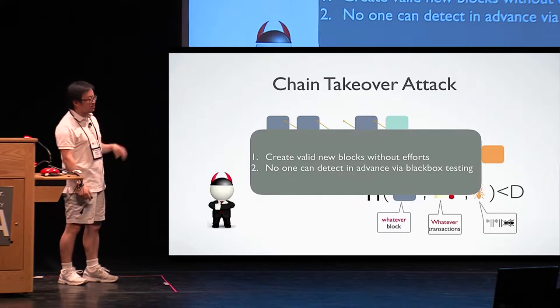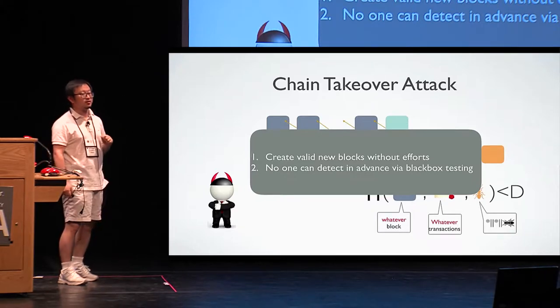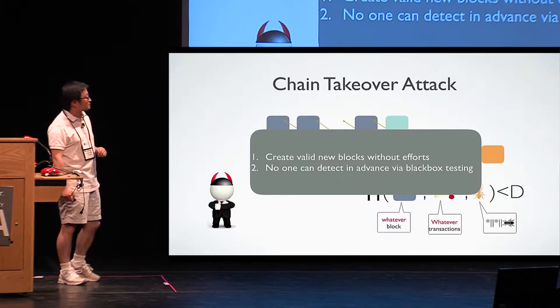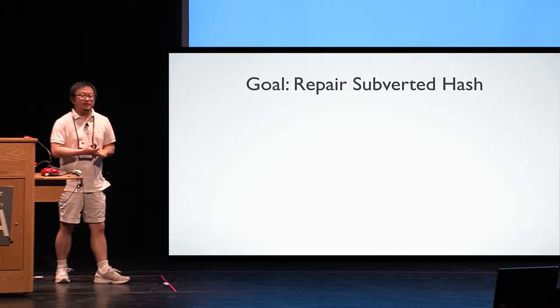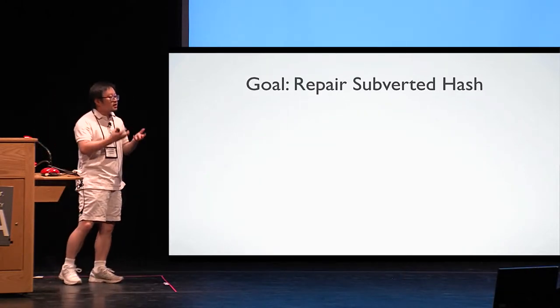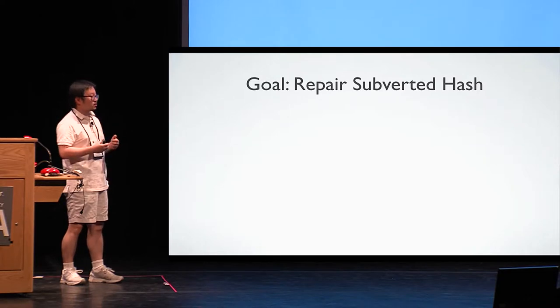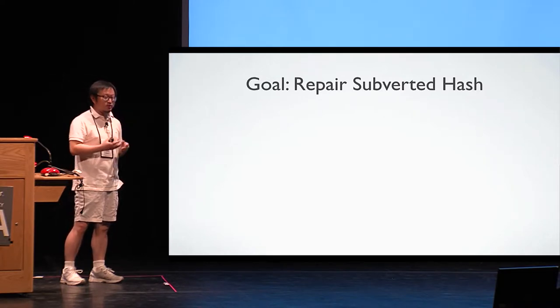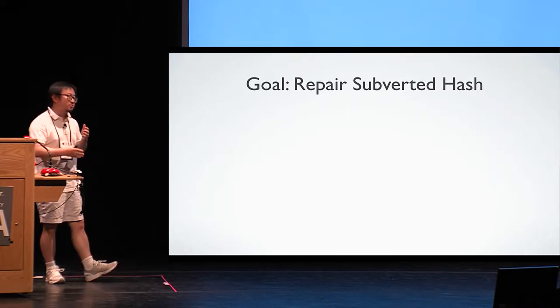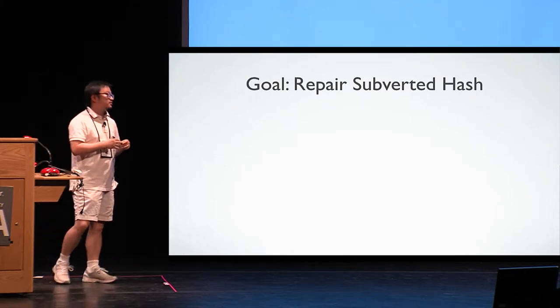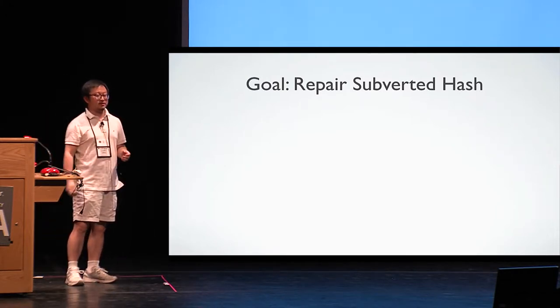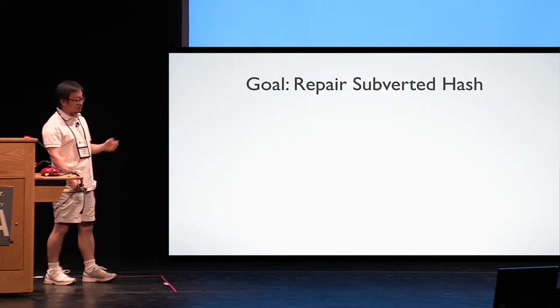Now I kind of convinced you that this is really a serious threat that we need to handle. Actually, a similar type of attack can be applied in many other scenarios as well. For example, password logging. So our goal in this work is to try to correct a subverted hash back. We can still inherit all the nice properties of the optimization or whatever, but we can safely and confidently deploy such a hash function in other systems.